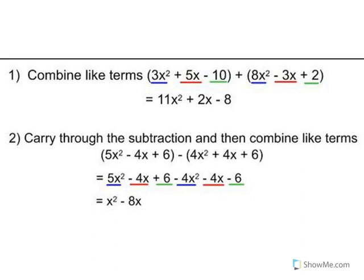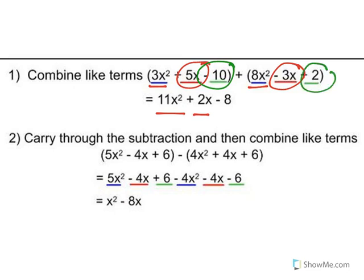So for example, when you're adding, it says combine like terms. The like terms are anything that has the same exponent. So the ones that are alike are the 3x squared and the 8x squared — just add 3 plus 8, and that's 11x squared. Your next term is the x term: 5x minus 3x, so 5 minus 3 is 2x. And then for the constant, you have a negative 10 — because it's the sign in front of the number — negative 10 plus 2 gives you a negative 8.